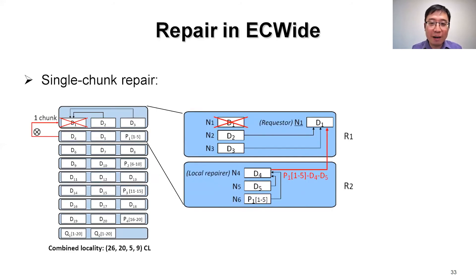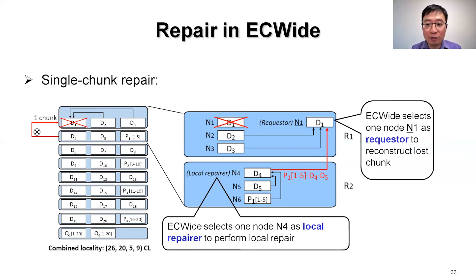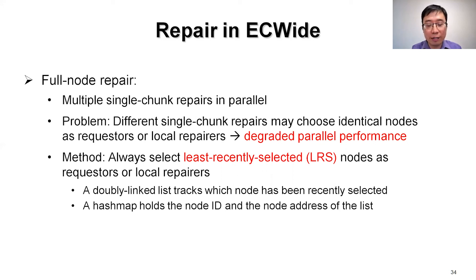Specifically, for single chunk repair in EC-wide, the system first encodes and places chunks based on combined locality. To repair a data chunk, EC-wide selects one node from each involved rack as a local repairer to perform local repair. Then EC-wide selects one node as a requester to reconstruct the lost chunk by receiving data from all the local repairers. For full node repair, it is performed by multiple single chunk repairs in parallel. However, different single chunk repairs may choose identical nodes as requester or local repairer, causing overload and degrading parallel performance. Our solution is to always select the least recently selected nodes as requester or local repairers — we call it LRS.